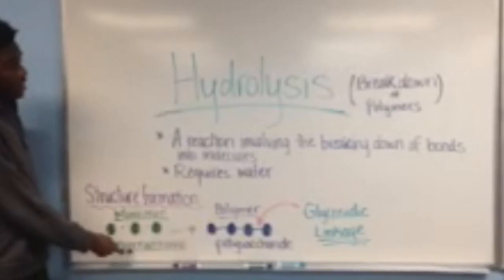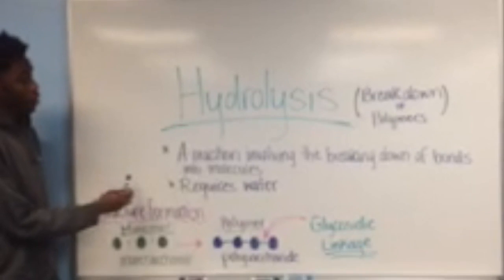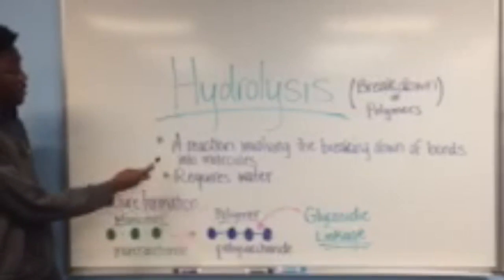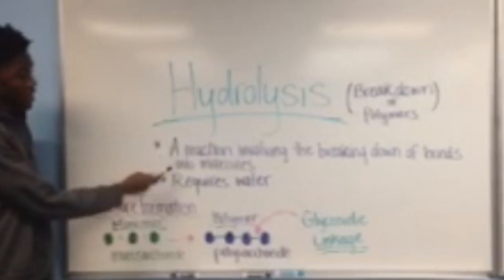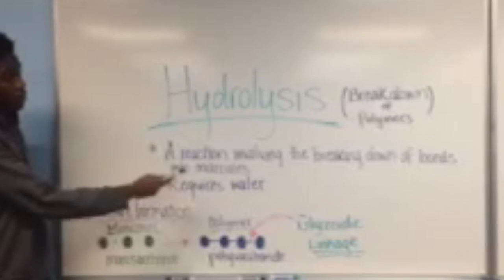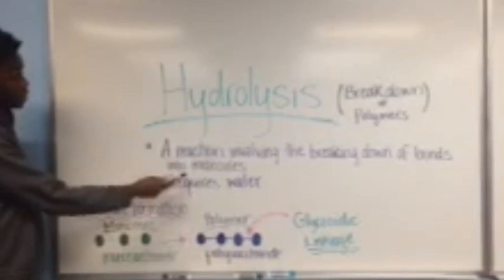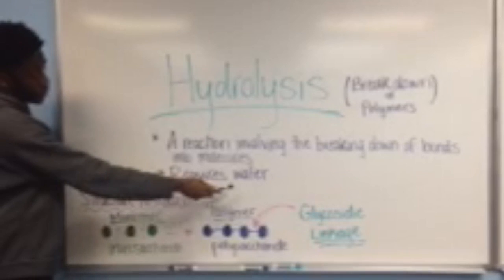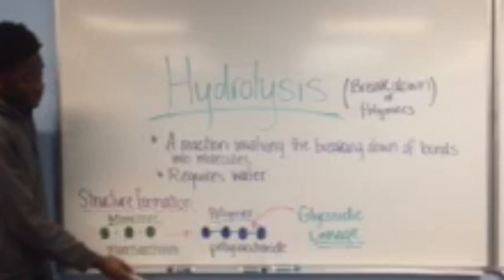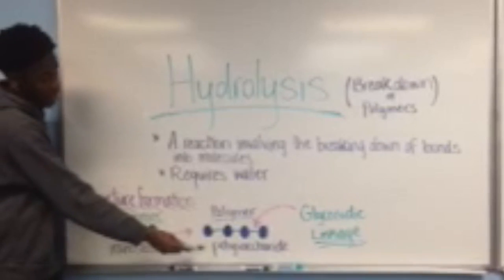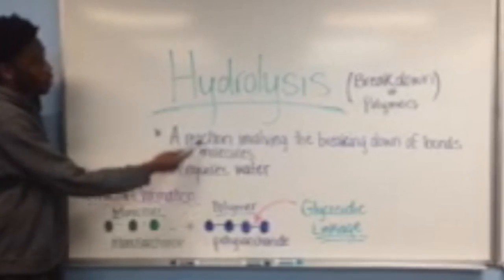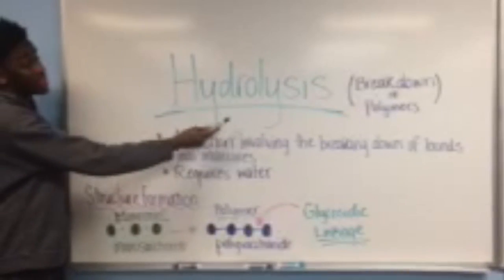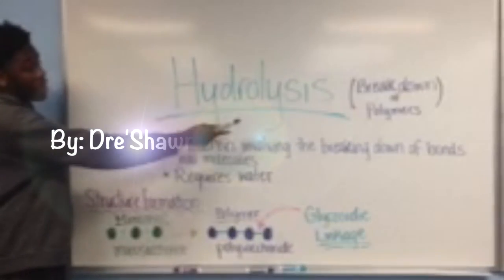Monosaccharides cannot undergo hydrolysis because hydrolysis is a reaction involving the breaking down of bonds in molecules, and it requires water. Polysaccharides, on the other hand, can undergo hydrolysis because it involves the breakdown of the polymer chains.